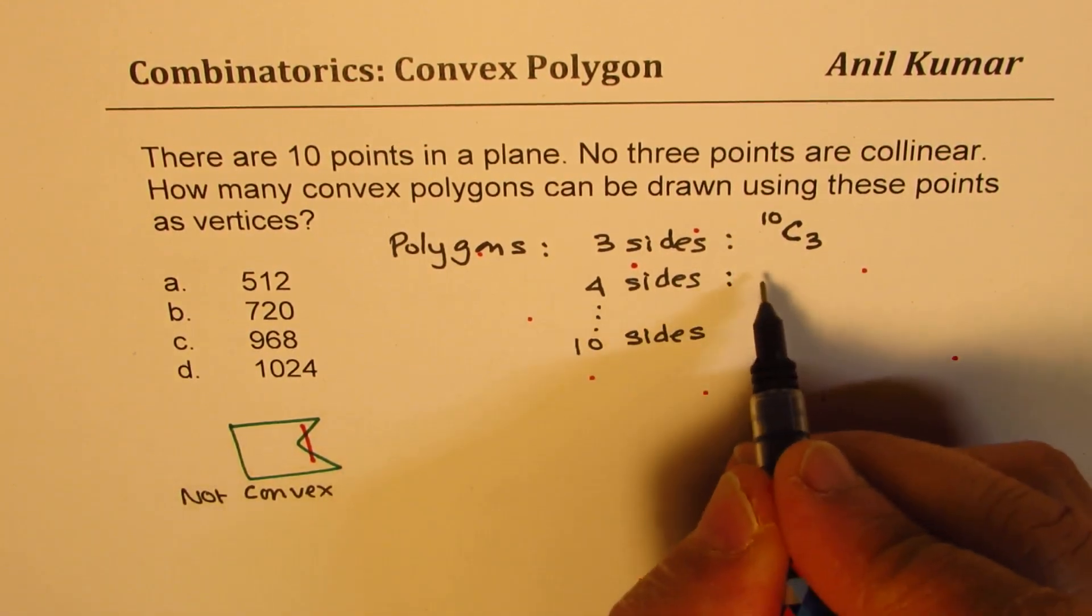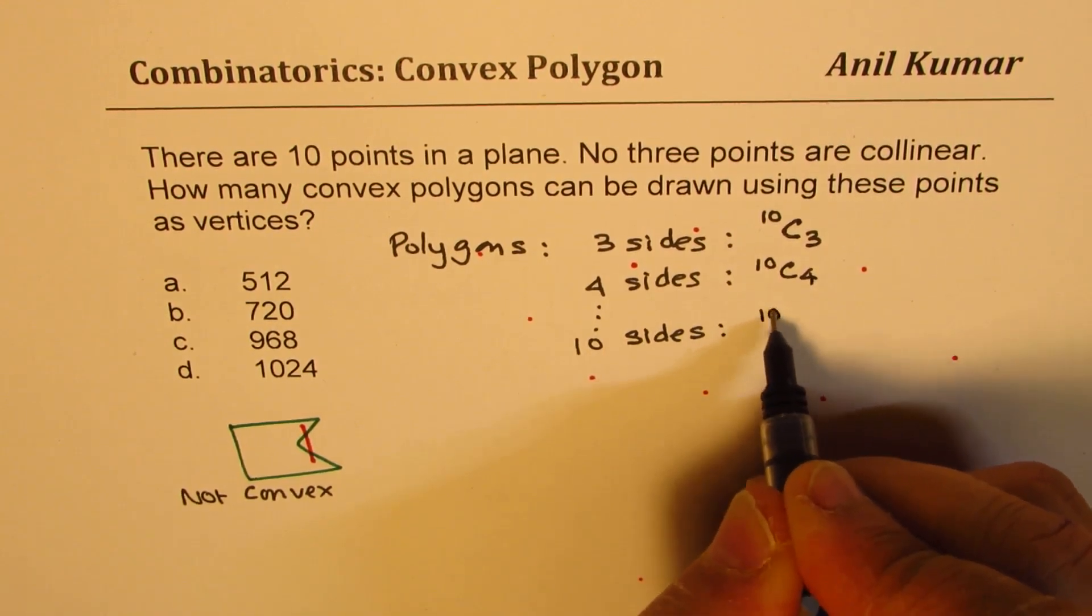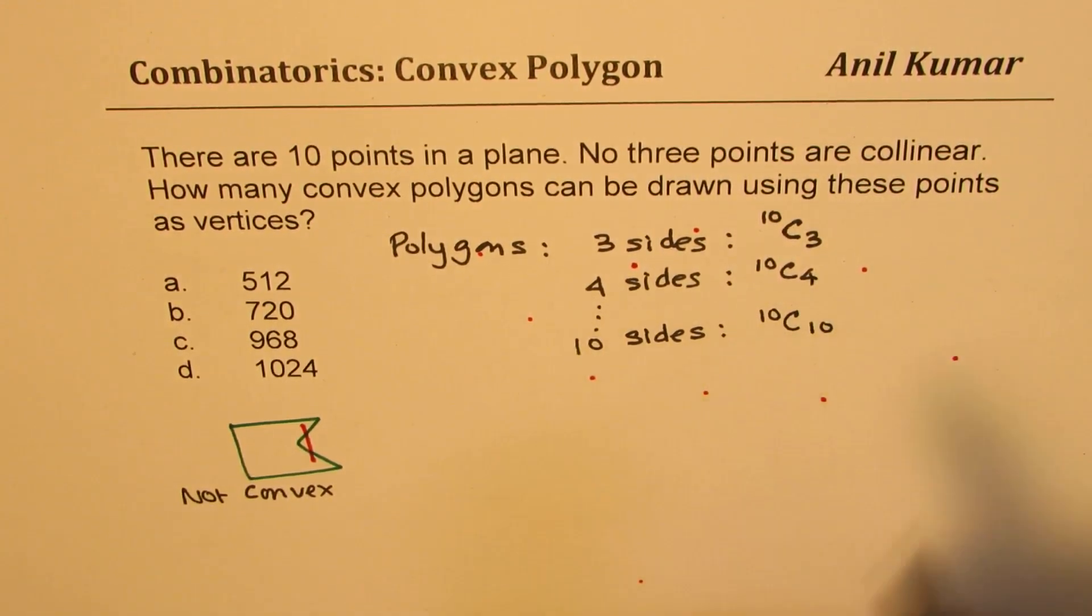So it is 10C and you're taking three together. So 10C3. Similarly, for four sides, it will be 10C4 and for n sides, it will be 10C10, correct?